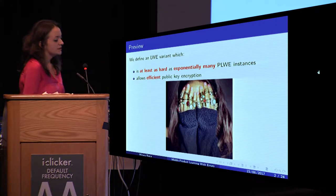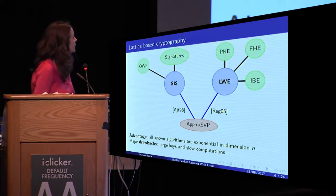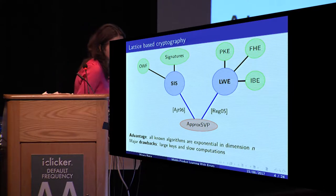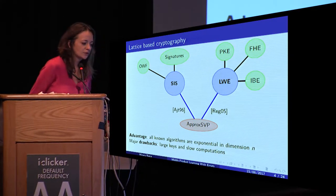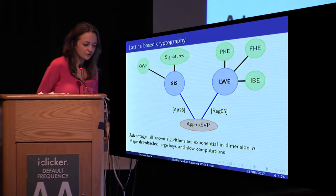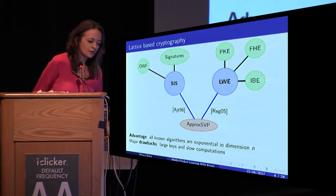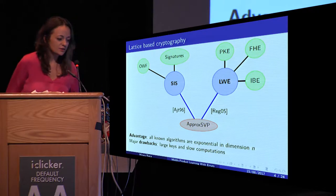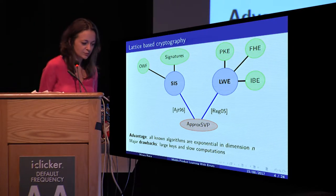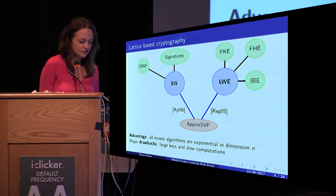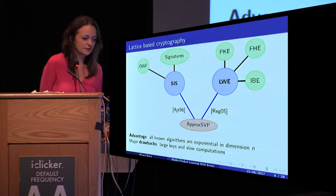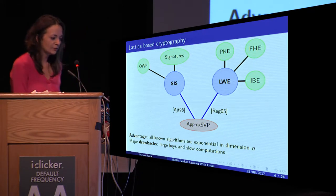I want to recall some basic stuff about lattice-based cryptography. Lattice-based cryptography relies in great part on the use of two problems: short integral solution, introduced by Ajtai in 1996, and learning with errors, introduced by Regev. They both enjoy reductions from worst-case lattice problems such as finding a short non-zero vector in a lattice, and they also provide a lot of cryptographic applications such as one-way functions, public key encryption, and fully homomorphic encryption.